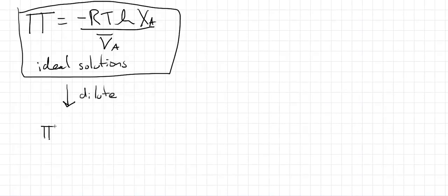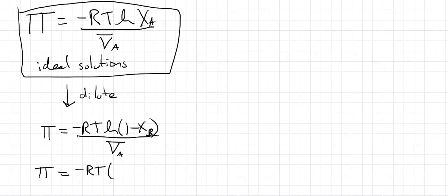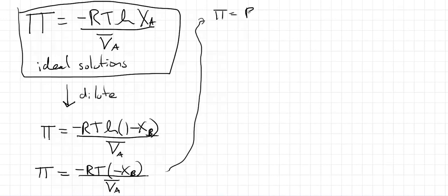So if it's dilute, what we're going to do is first we'll express the concentration in terms of the solute, X_B. And when we do that, we'll say, we'll use that series approximation we used before, right? If X_B is really small, then we can say that this is minus RT and we have minus X_B. And that's going to, those negative signs will cancel. So we get pi is equal to RT X_B over the molar volume of A.